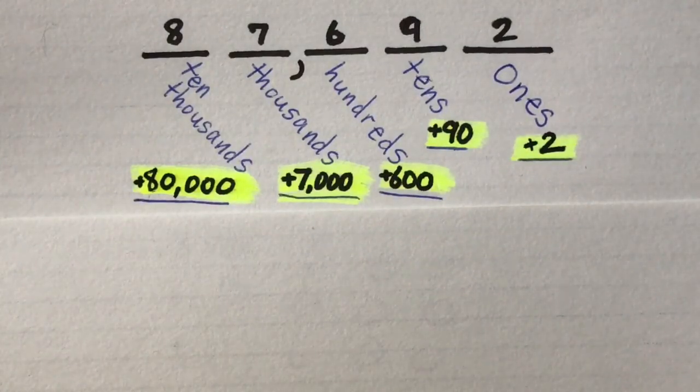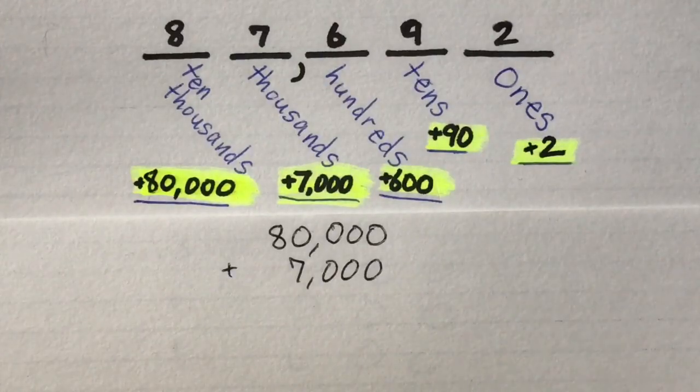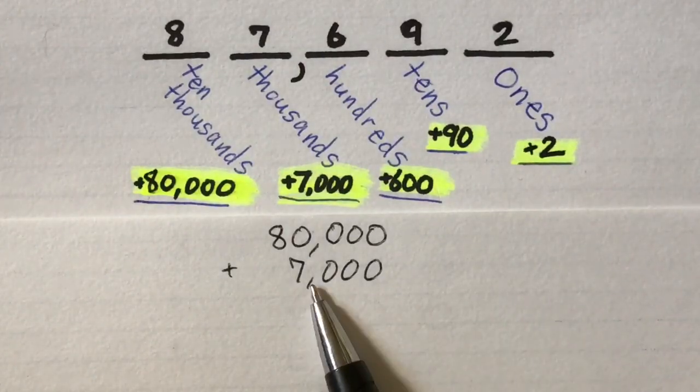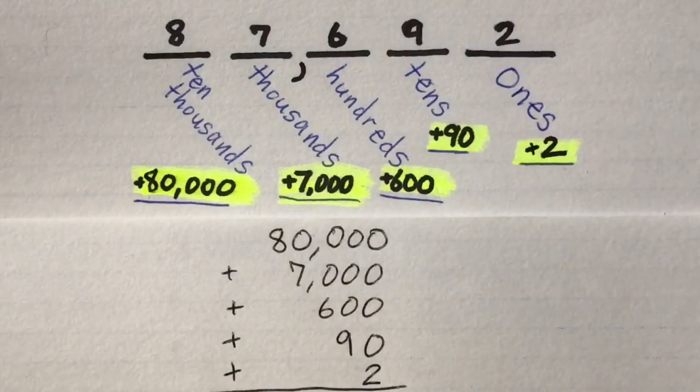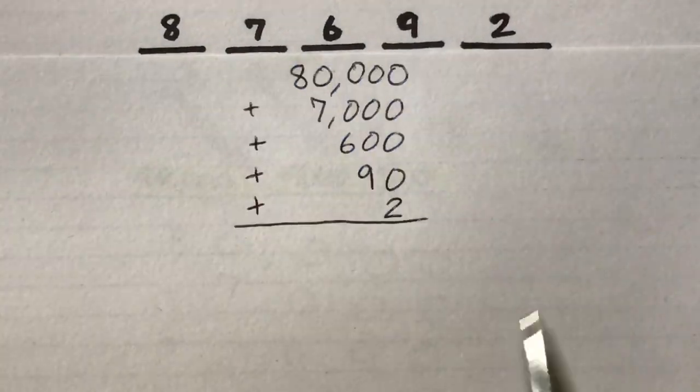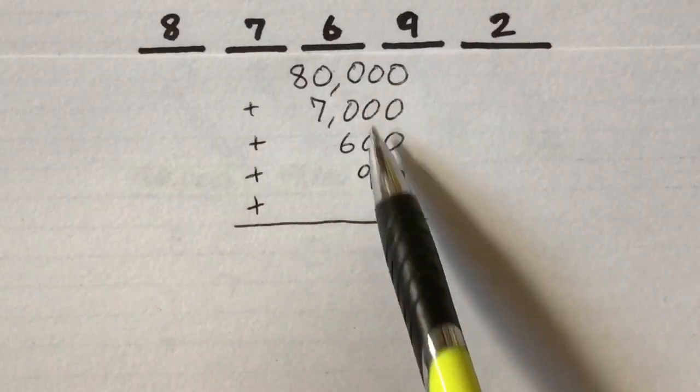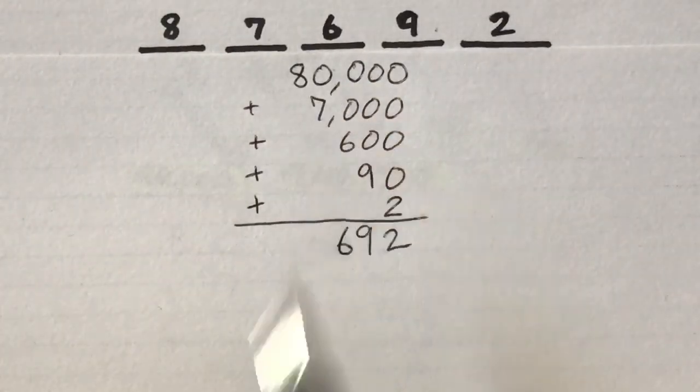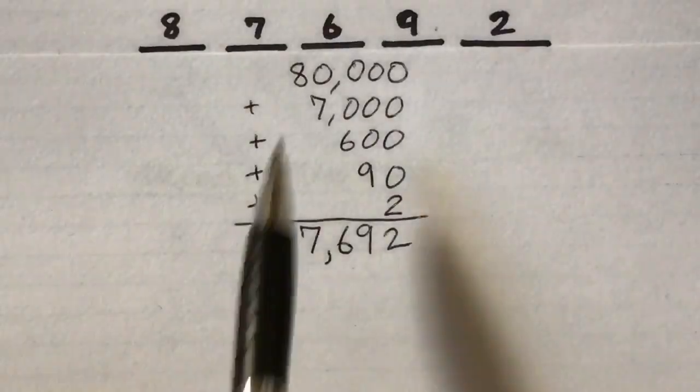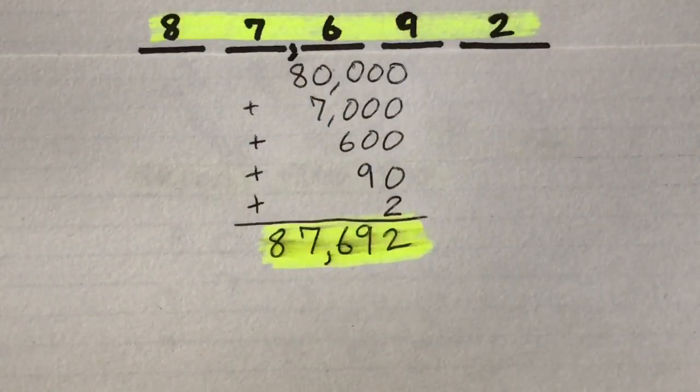We can add up all of our numbers and we should get exactly 87,692. Make sure you line up the commas whenever you are adding up large numbers. It looks like our expanded form matches our standard form.